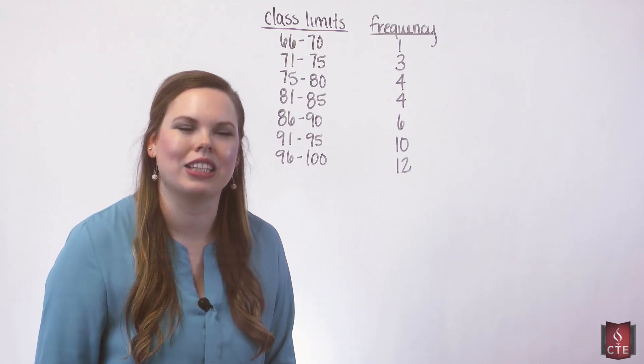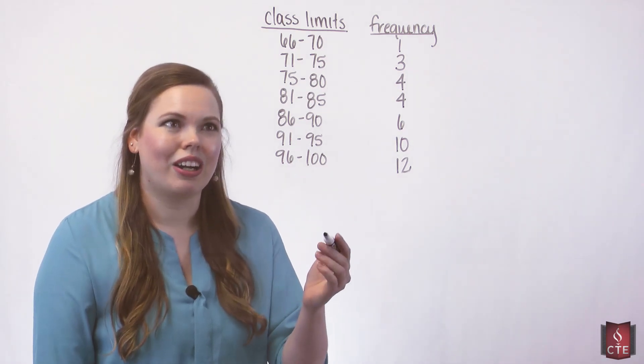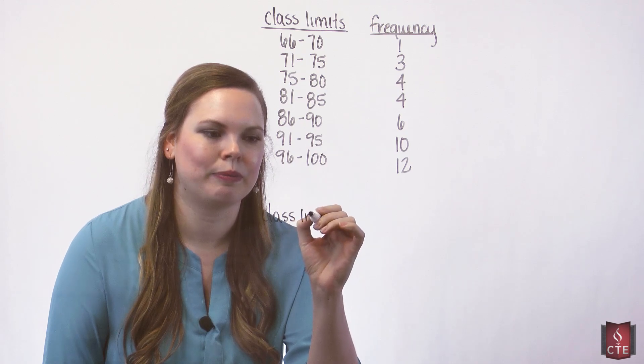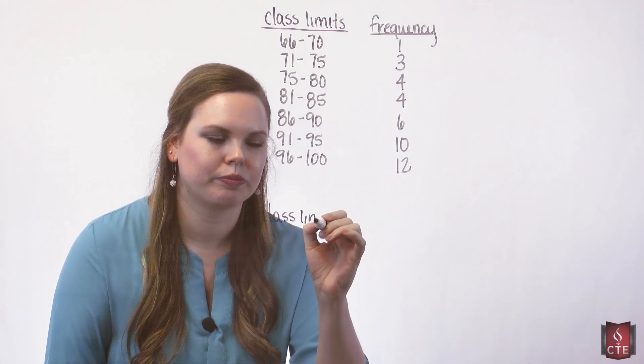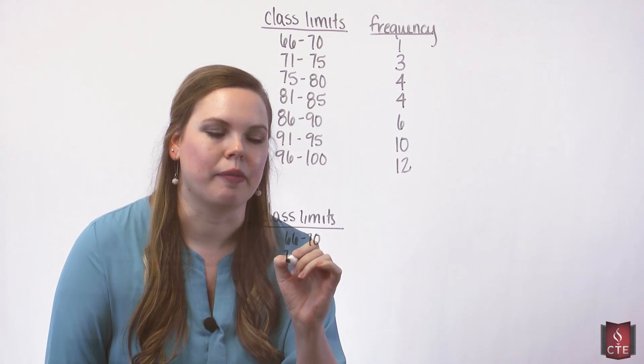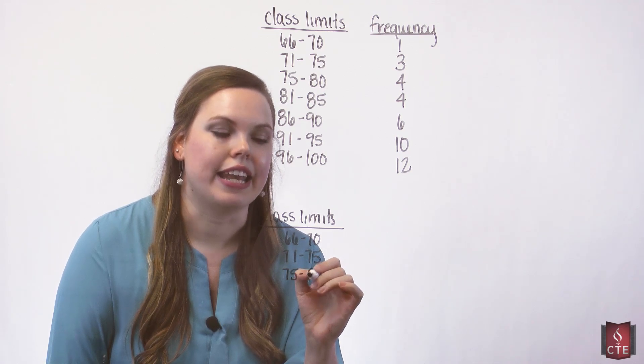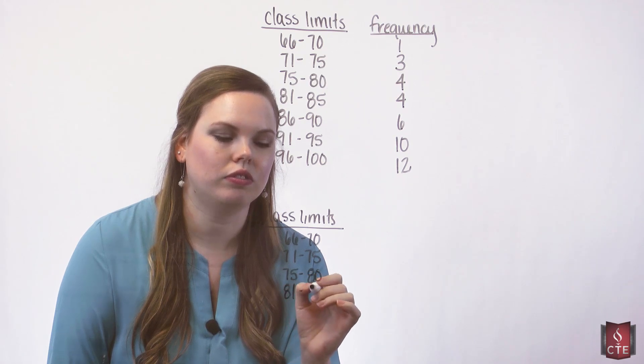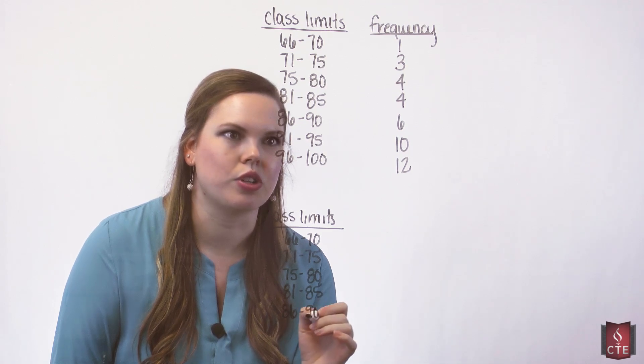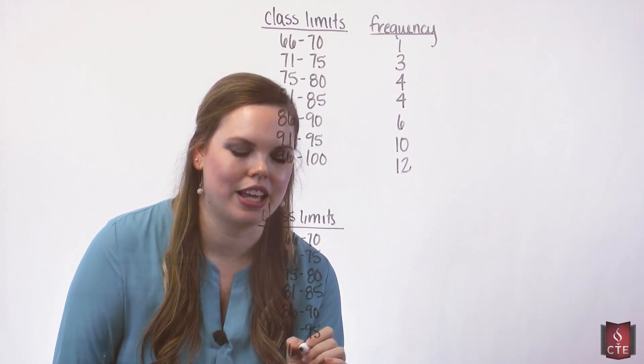Look at the class boundaries, the midpoints, the cumulative frequency, and the relative frequency. So let's start by, I'm just going to get my class limits on here since we're going to need them. Just rewrite them real fast because we'll need them to find our boundaries, which is what we're going to do next. It's nice to just see a very large frequency distribution with all the little details on it. And that's what we'll be doing.